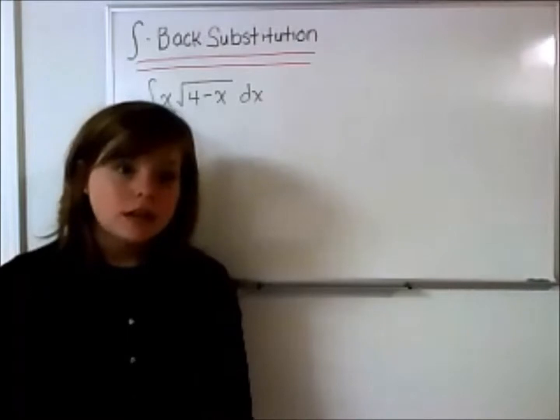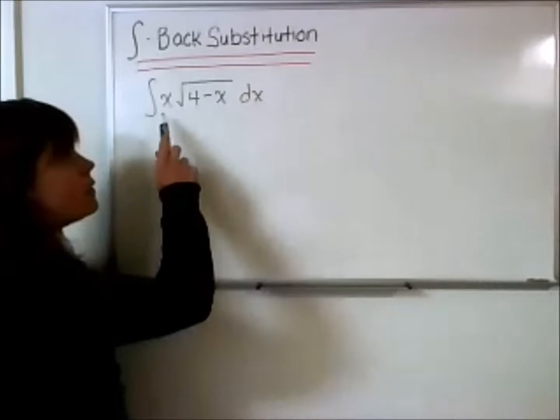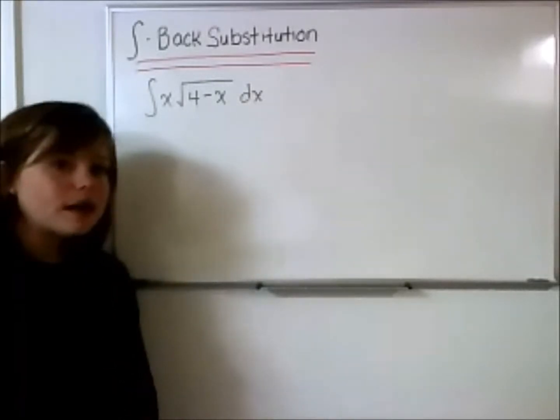So, first let's look at the integral that we're trying to solve. In this integral, we have x times the square root of 4 minus x.